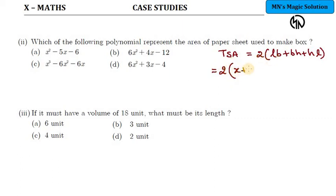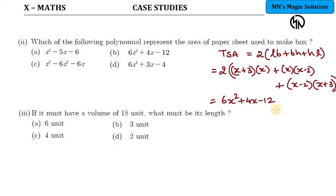The dimensions: length you took as x plus 3, breadth is x, plus BH. Again x into height is x minus 2, plus HL. H is x minus 2 into length is x plus 3. The entire product will give you the exact TSA expression. That comes out as 6x squared plus 4x minus 12. In the option, it is nothing but option B here.